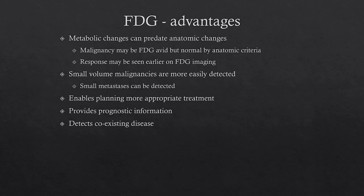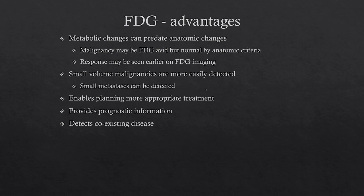The advantages of PET-CT are that you can image metabolic changes, which often predate anatomic changes. So you would see malignancy on FDG which you would not see on anatomic imaging. Treatment response can similarly be seen earlier on FDG imaging — a lymph node or mass may not have changed by size criteria but may be responding based on PET criteria. Small metastases can also be detected better. FDG also helps plan more appropriate treatment, provides prognostic information, and can help detect coexisting disease such as other malignancies.